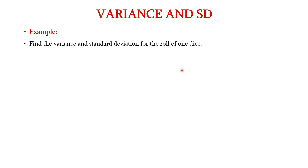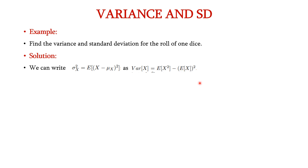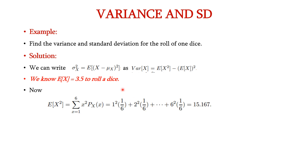Let us see an example for variance and standard deviation. Consider rolling one dice. We can write the variance of x as E of x squared minus E of x whole square. We know that E of x is 3.5 for rolling a dice from our previous explanation. Now we calculate E of x squared as x squared into p of x, taking values from 1 to 6. So the possible values of x have to be squared: 1 squared into 1 by 6 plus 2 squared into 1 by 6, up to 6 squared into 1 by 6.